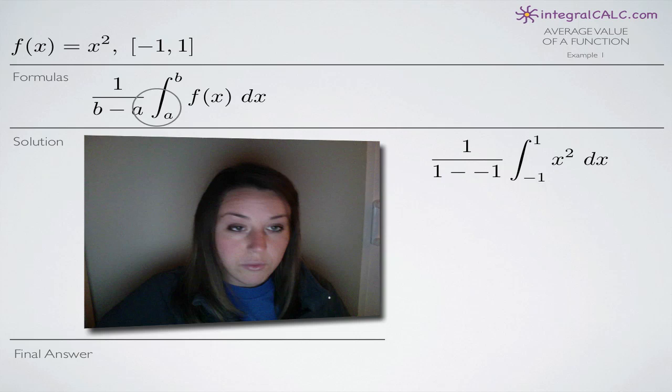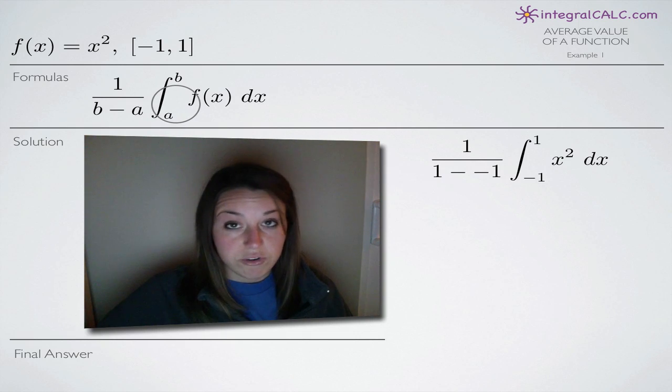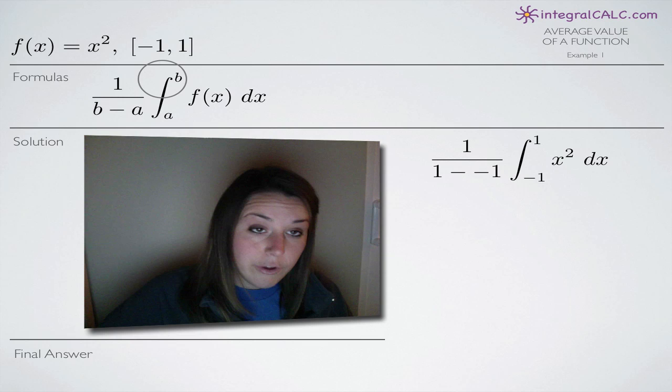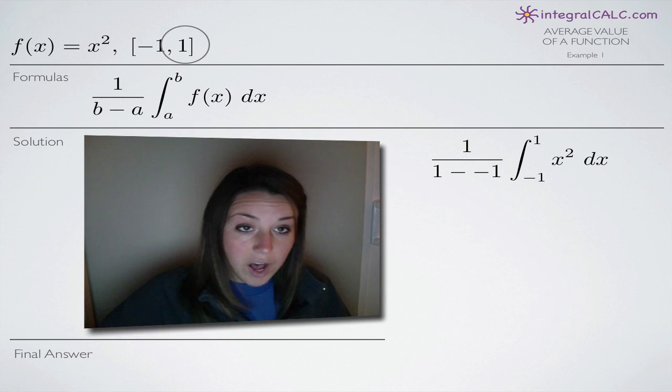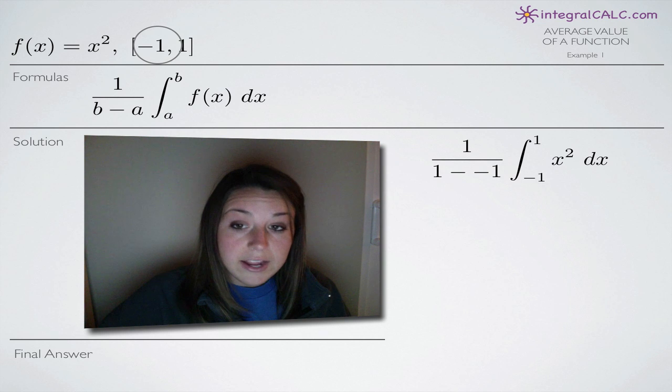So the first thing that we're going to do is set up our integral. In other words, just plug everything in. So we're given the range a comma b here. a comes first, b comes second. So we plug in negative 1 for a and 1 for b.